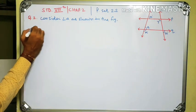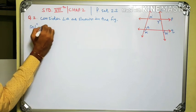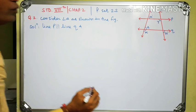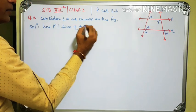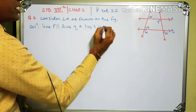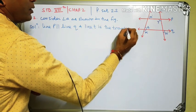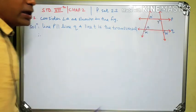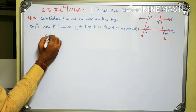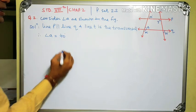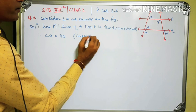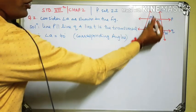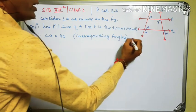Solution: line P is parallel to line Q, and line T is the transversal. Therefore, A and 40 are corresponding angles. Therefore, angle A equals 40 degrees, because corresponding angles formed by parallel lines and a transversal are congruent.